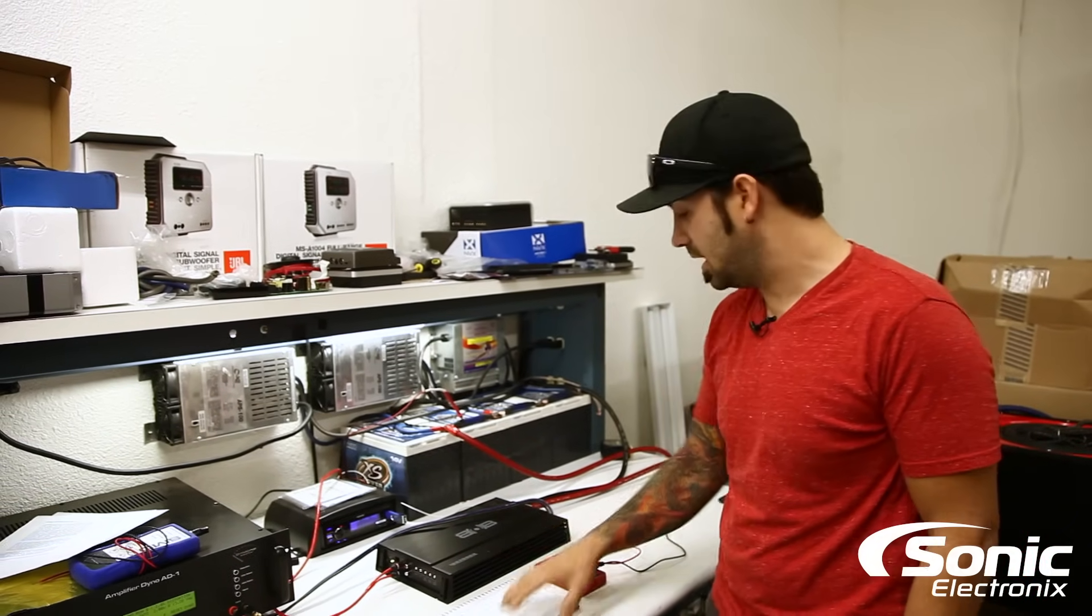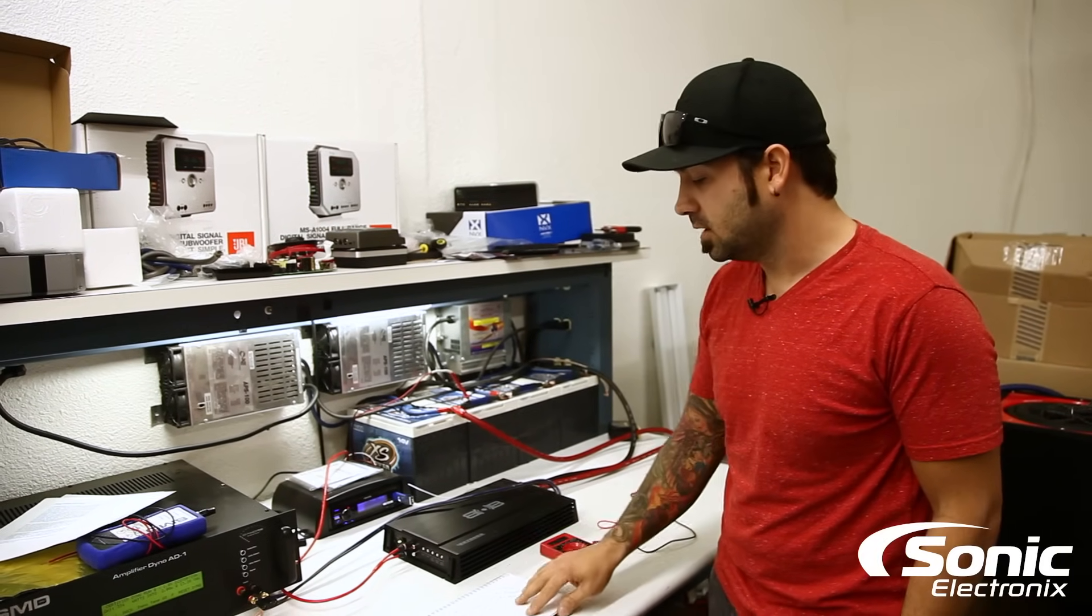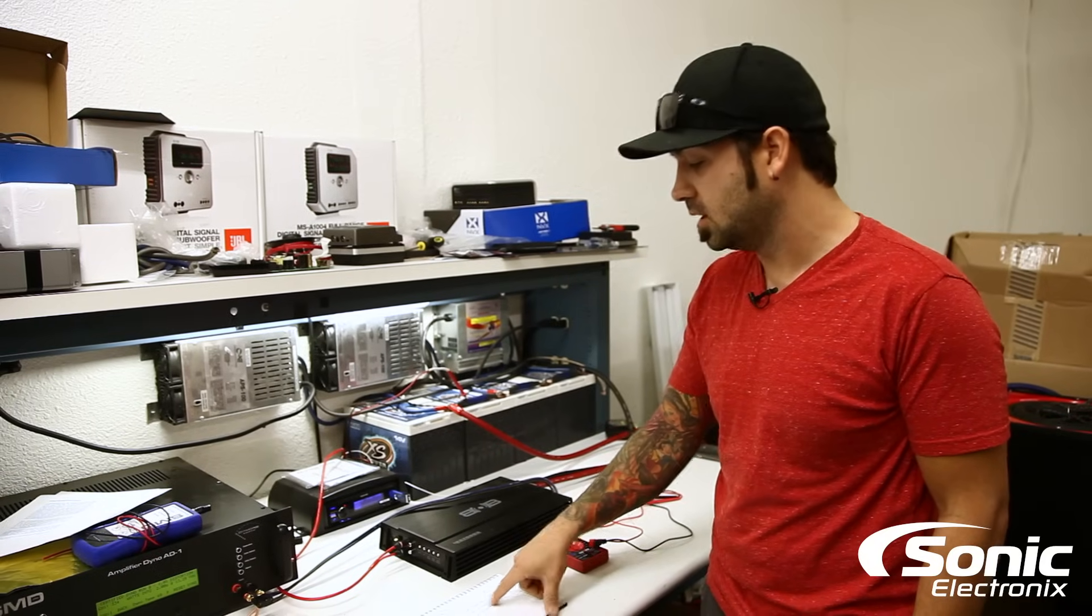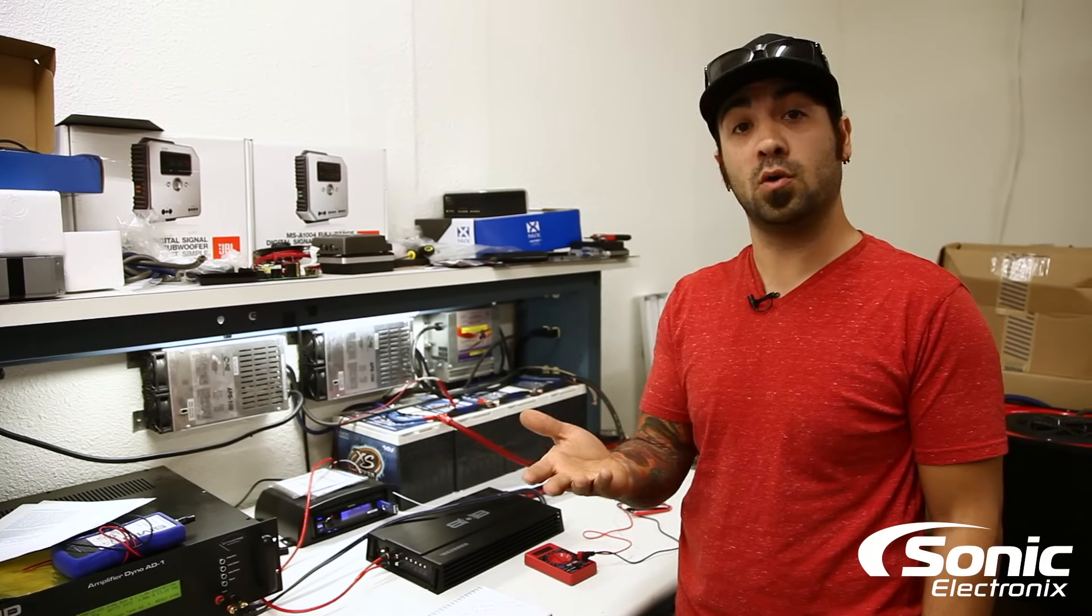So you can see that this proves the concept that we can use the multimeter by setting the gain that way. And just for the hell of it, I'm gonna go ahead and do the 300 formula but at a 4 ohm load and show you that.